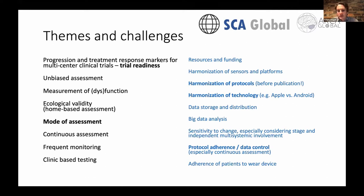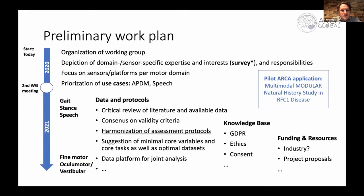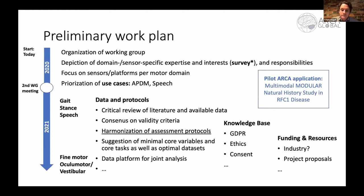Initially we're going to start with case use examples and demonstrate the capacity of different sites to harmonize protocols across different geographical regions. We've established the working group and the five domains of interest, with individuals leading particular domains. We're establishing a core set of metrics for movement — for example — that have adequate reliability, stability, and sensitivity to change, beginning with those and then expanding once we've established the viability of that approach.